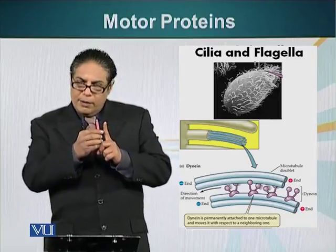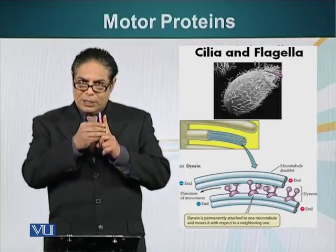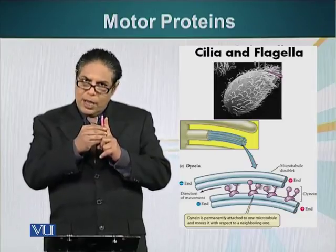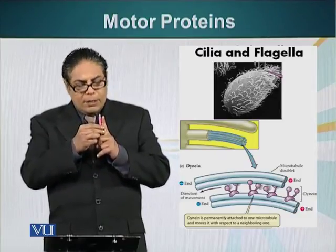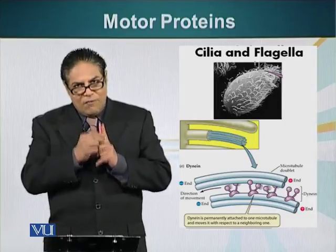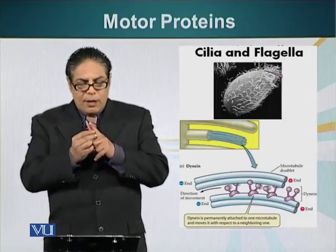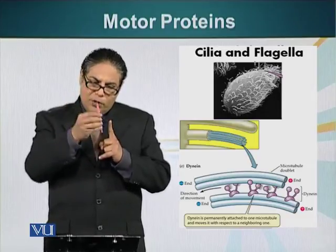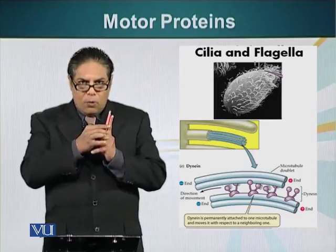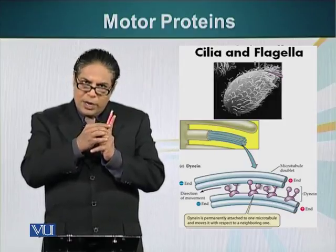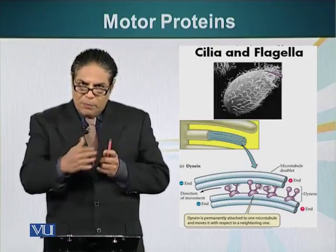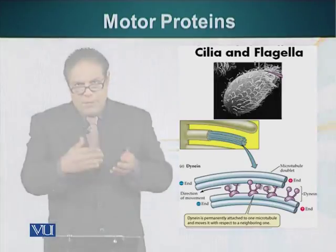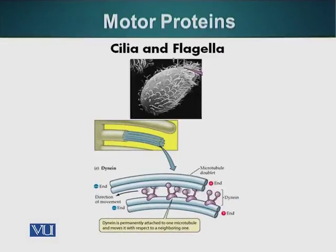When a motor protein is activated and binds to microtubules, it tries to move, but the microtubules in the case of flagella and cilia are fixed. So it cannot move one microtubule along the length of another microtubule. Basically, this whole exercise results in an undulating movement, and this propels the organism — which has the flagella — in the direction opposite to the movement of the flagella.